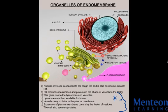In eukaryotes, some of the organelles in the endomembrane system include the nuclear envelope, the endoplasmic reticulum, the Golgi apparatus, lysosomes, vacuoles, vesicles, peroxisomes, and the cell membrane.